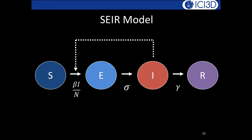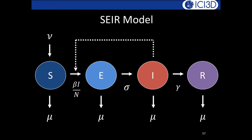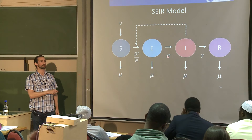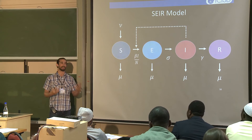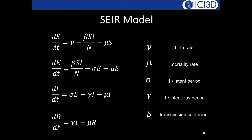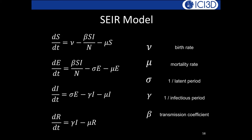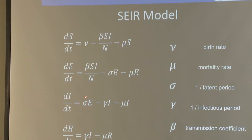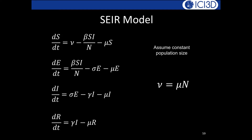We now extend to the SEIR model, adding an 'E' compartment for individuals who are infected but not yet infectious — the latent period. In mathematical epidemiology, 'E' (exposed) specifically means infected-but-not-yet-infectious, which differs from the epidemiological meaning of 'exposed' (possibly infected but unknown). The rate sigma governs flow from E to I, with 1/sigma equal to the latent period.